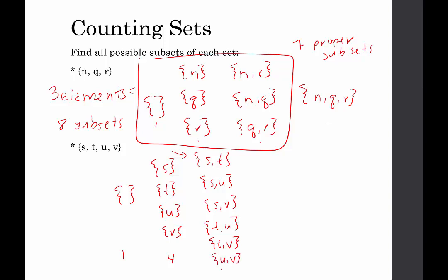How many sets containing two elements? We have six. Now for subsets containing three elements, you can think of the one-element sets and three-element sets as kind of complements of each other. The set containing s is missing t, u, v. The set containing t is missing s, u, v. The set containing u is missing s, t, v. And the set containing v is missing s, t, u. So there will be four subsets containing three elements.